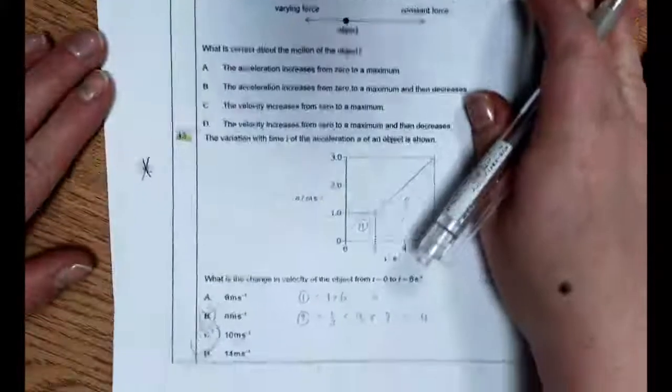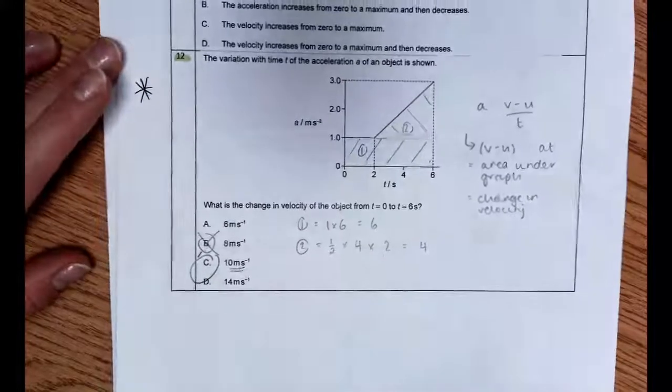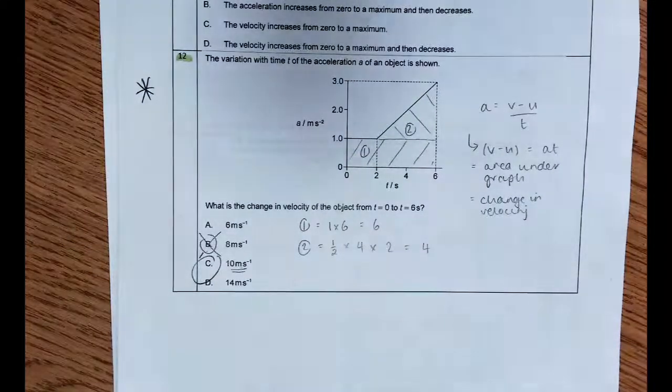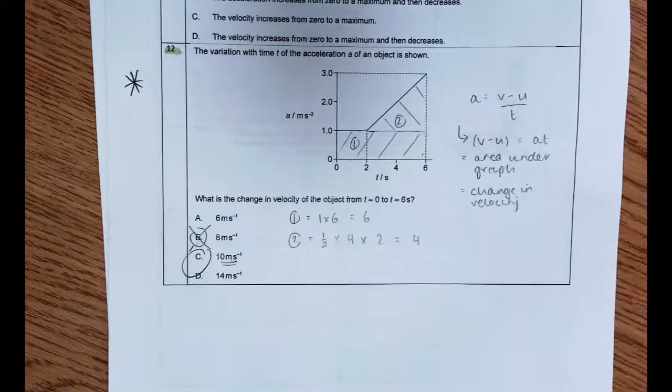The next one that was only on the SL paper was question 12. So in question 12, the variation with time t of the acceleration a of an object is shown. The IB Mark scheme I disagree with on this one.